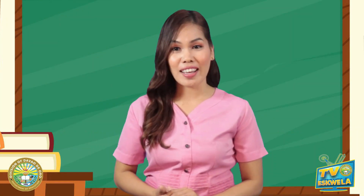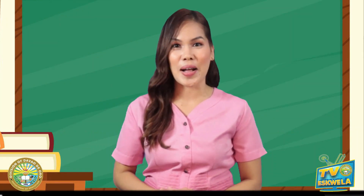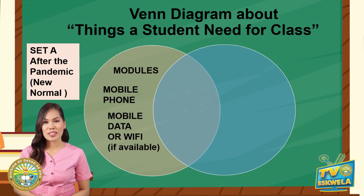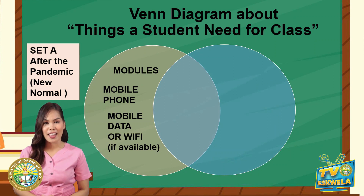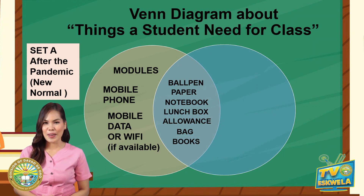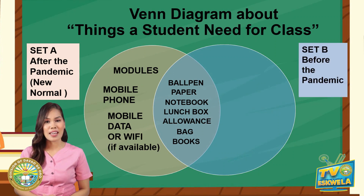Now let's check the sets in our Venn Diagram. For set A, things a student needs after the pandemic are: modules, mobile phone, mobile data or wi-fi, ball pen, paper, notebook, lunchbox, allowance, bag, and books. And for set B, things a student needs for class before the pandemic.